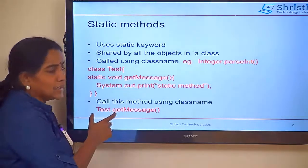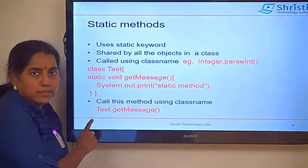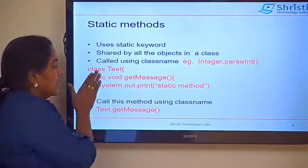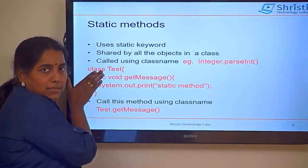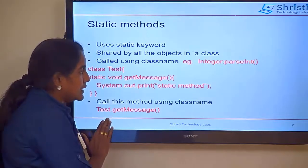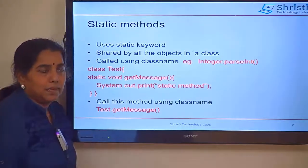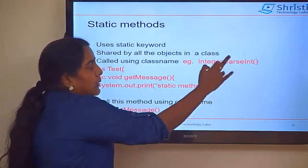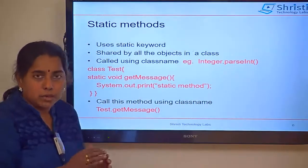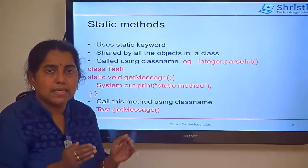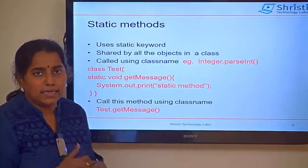How to call a static method? Always, the static method will be called using the class name. If it is a normal method, you create an object and call the method. But if it is a static method, you call it with class name dot method name — Integer.parseInt, for example. One more thing: if the static method is available in the same class, you can call the static method directly.